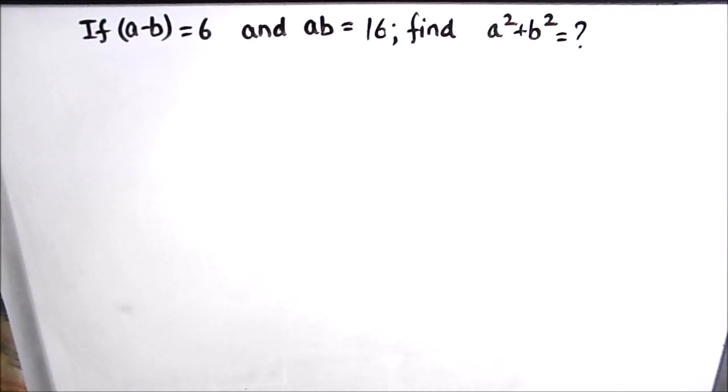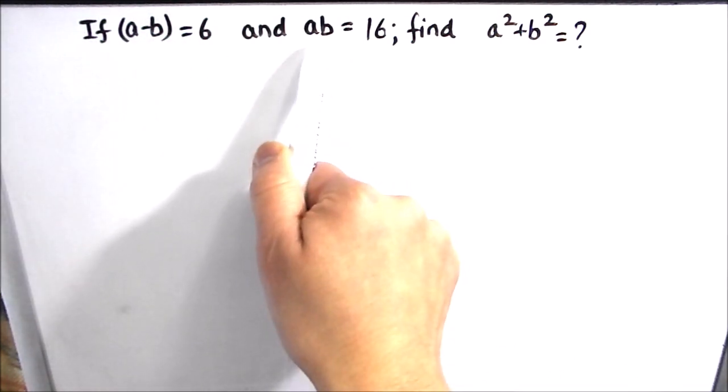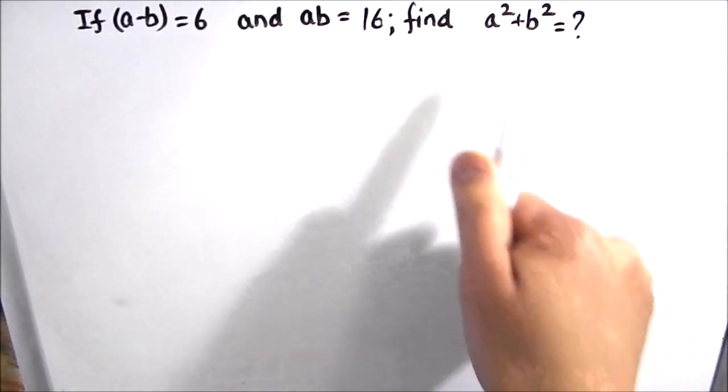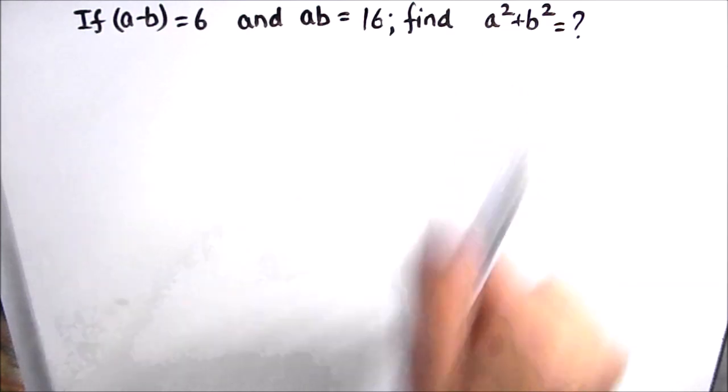Hello everyone, in this video we are going to be solving a very interesting problem where we have been given A minus B as equal to 6 and AB, that is the product of A and B, as 16. We need to find the sum of the squares of two numbers, that is A² + B².